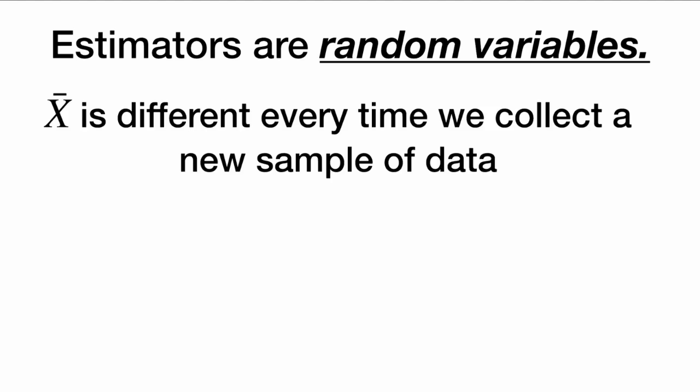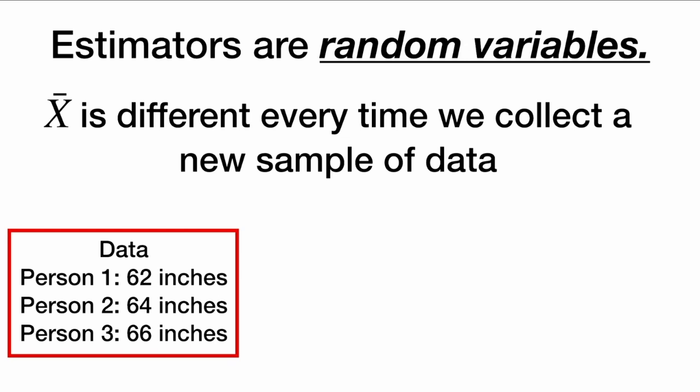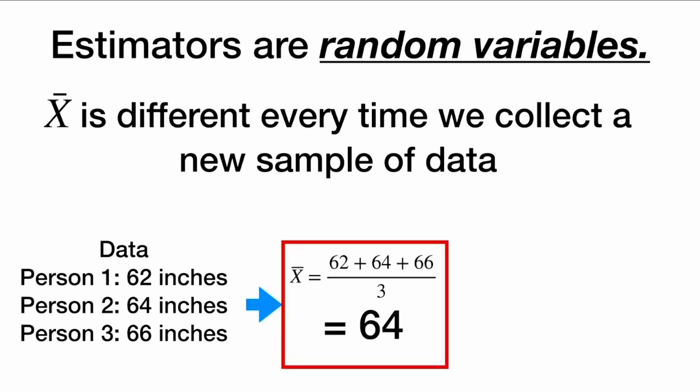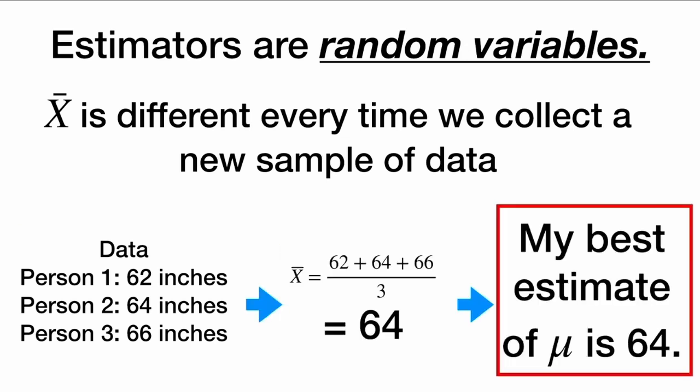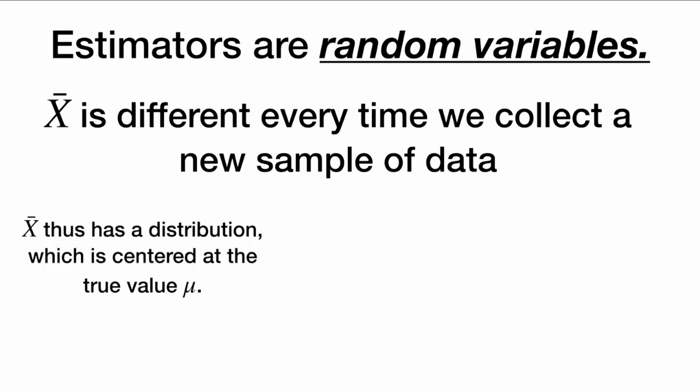Now, estimators are random variables. This means that x-bar is different every time we collect a new sample of data. For example, if I collected three different people and the average of their height was 64 inches, then my best estimate of mu based on this data would be 64 — it changes when we get a different sample of people. So x-bar, because it's random, has a distribution.